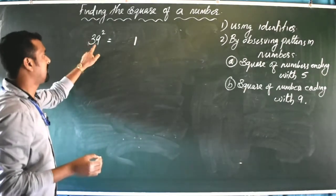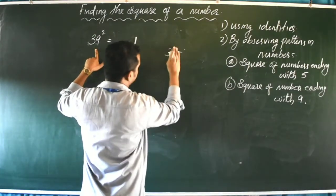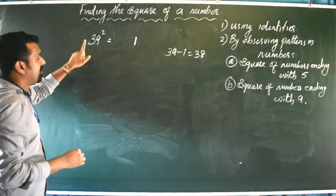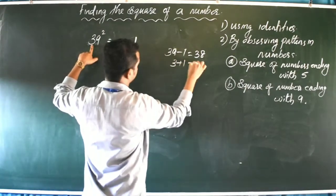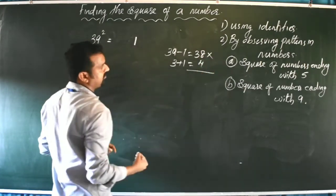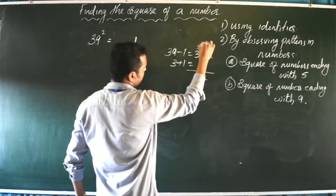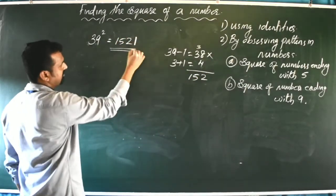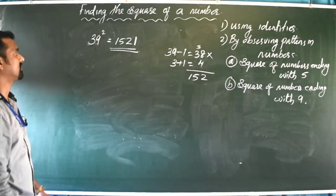Subtract 1 from the number: 39 - 1 = 38. Then add 1 to the first digit: 3 + 1 = 4. Now multiply these two results: 38 × 4 = 152. So the answer is 1521, with the digit 1 written at the end.